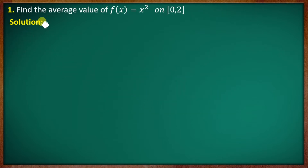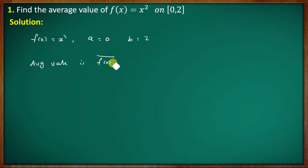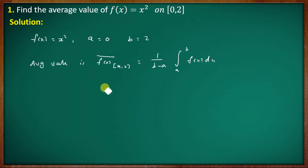One of the problems here — first question: find the average value of f(x) = x² on closed interval [0, 2]. Here f(x) = x², the a value is 0, and the b value is 2. The average value formula is: f-bar on [a, b] equals 1 over (b minus a) times the integral from a to b of f(x) dx.